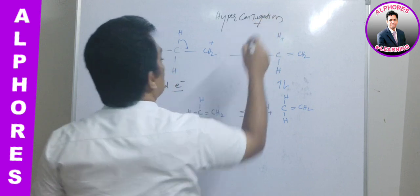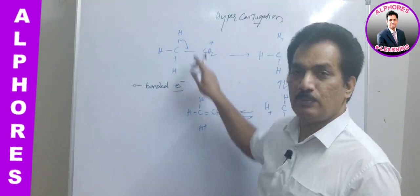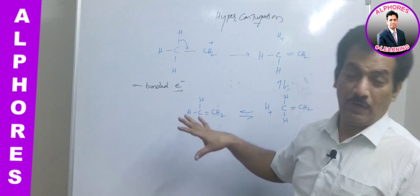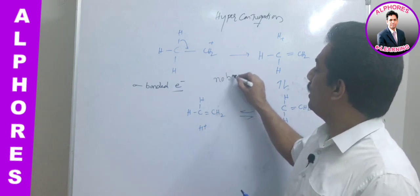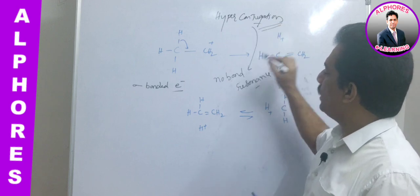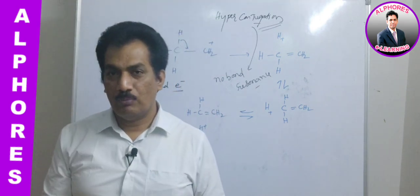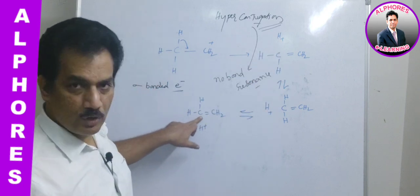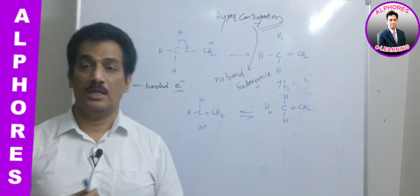In hyperconjugation, the sigma-bonded electrons are ready to contribute, delocalize, or displace to the conjugative system. Because of this, conjugation — that is, resonance — occurs, but it is a special type called no-bond resonance, because when sigma-bonded electrons are dislocated to form the pi bond, there is no bonding between the hydrogen and carbon. This effect was observed by Baker and Nathan, so hyperconjugation is also known as the Baker-Nathan effect.